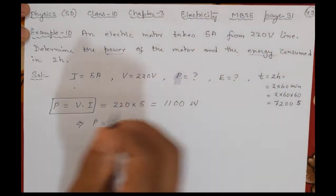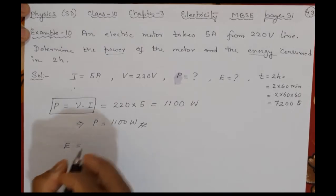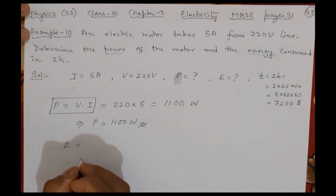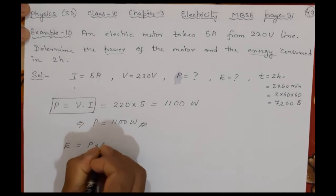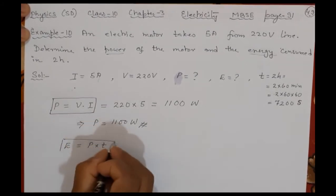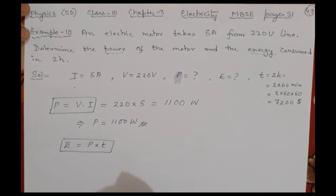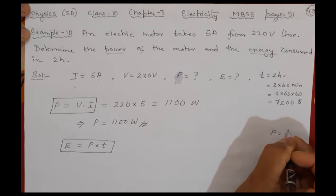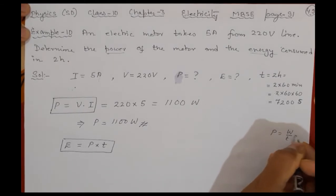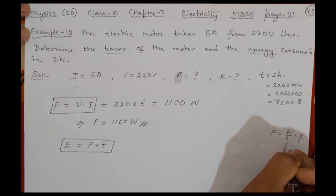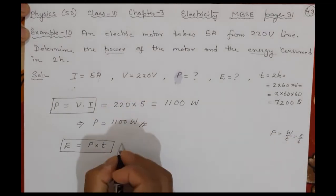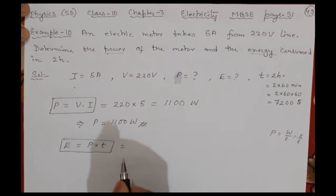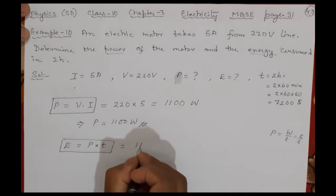The second question is energy consumed. Energy and power have some relation. When you multiply power and time, you get the energy. Why is this so? Because power is work done by time, and work done is nothing but energy by time. So power is energy by time. From this you can write energy is power into time. Remember this.